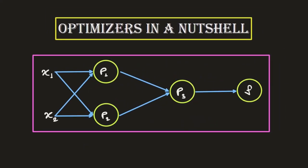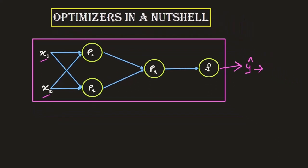Before we start understanding any individual optimizer within deep learning, let's have a quick recap of what optimizers are in a nutshell. Assuming you are following all the lectures in this playlist in sequence and have covered the lecture on forward and backward propagation — in a forward propagation we feed in the input feature values to the model, and with forward propagation we get an output from the final layer that helps us calculate the loss.